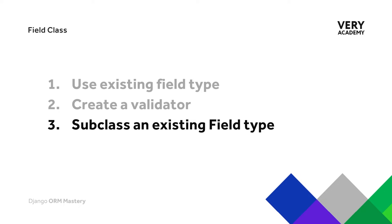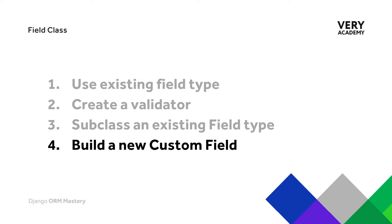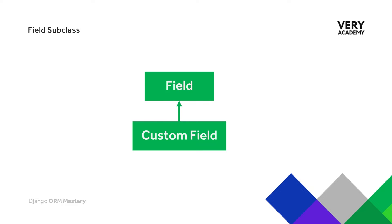When an existing field type doesn't quite meet any of our needs, we can build our own new custom field. In this case, we won't be subclassing from an existing field; instead we would subclass directly from Django DB models.field. Needless to say, there is a bit more work required to build the functionality with this approach, so it's always worth considering whether you can first subclass from an existing field.